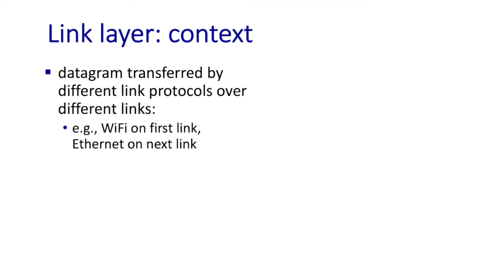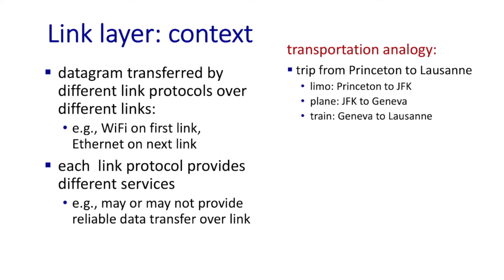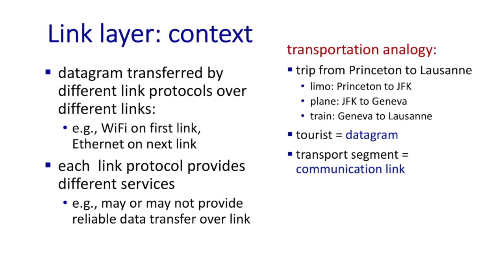Let's put the link layer into the larger end-to-end context. Following an IP datagram from its initial source to its final destination, we see that along the way it could be transferred by different link protocols over different links — for example, Wi-Fi on the first link, Ethernet on the second link, and so on. Different link layer technologies provide different services. Consider a traveler analogy: a trip from Princeton to Lausanne would involve a car to JFK airport, a plane to Geneva, then a train to Lausanne. In this analogy, the tourist is the datagram, each travel segment is a communication link with different services, and the transportation mode is the link layer protocol.